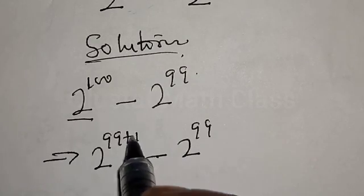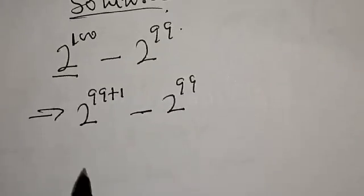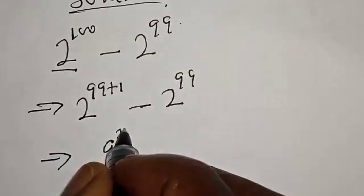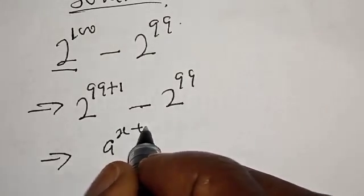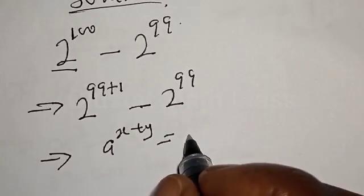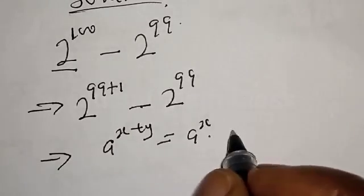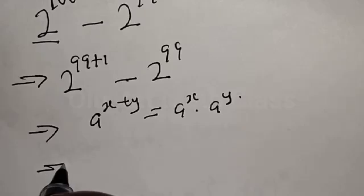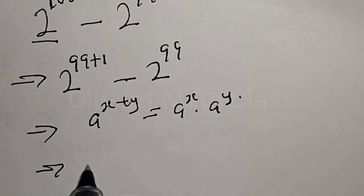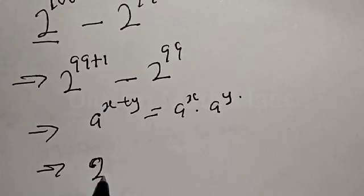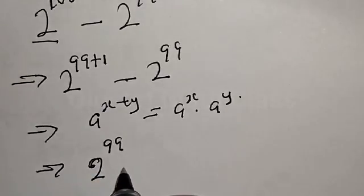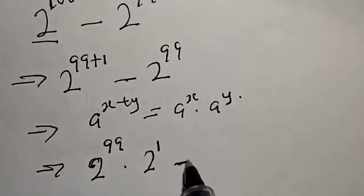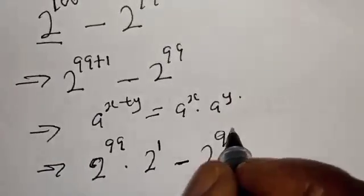Now, this implies that if you have a raised to power s plus y, it equals a raised to power s multiplied by a raised to power y. Applying this rule, we get 2 raised to power 99 multiplied by 2 raised to power 1, minus 2 raised to power 99.